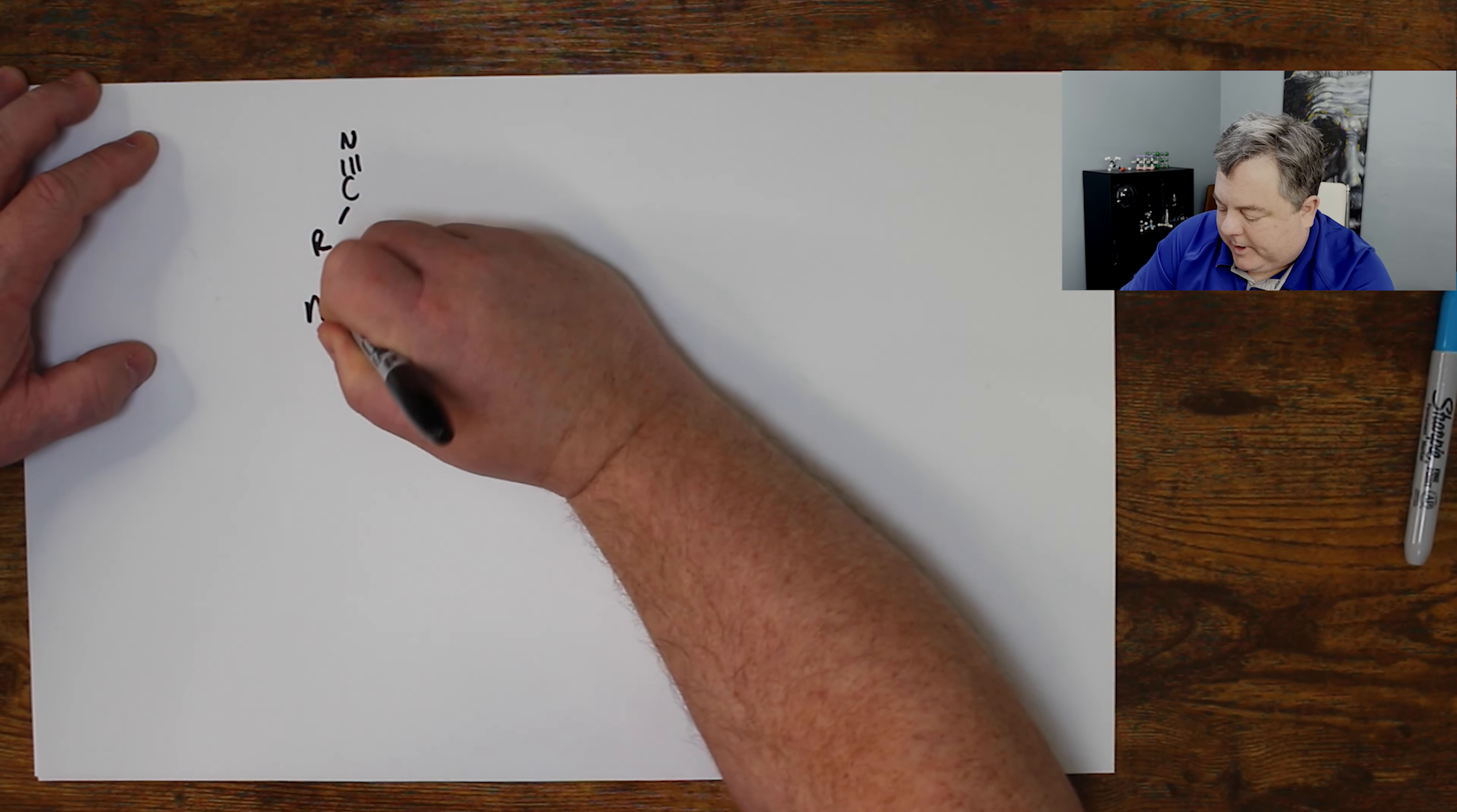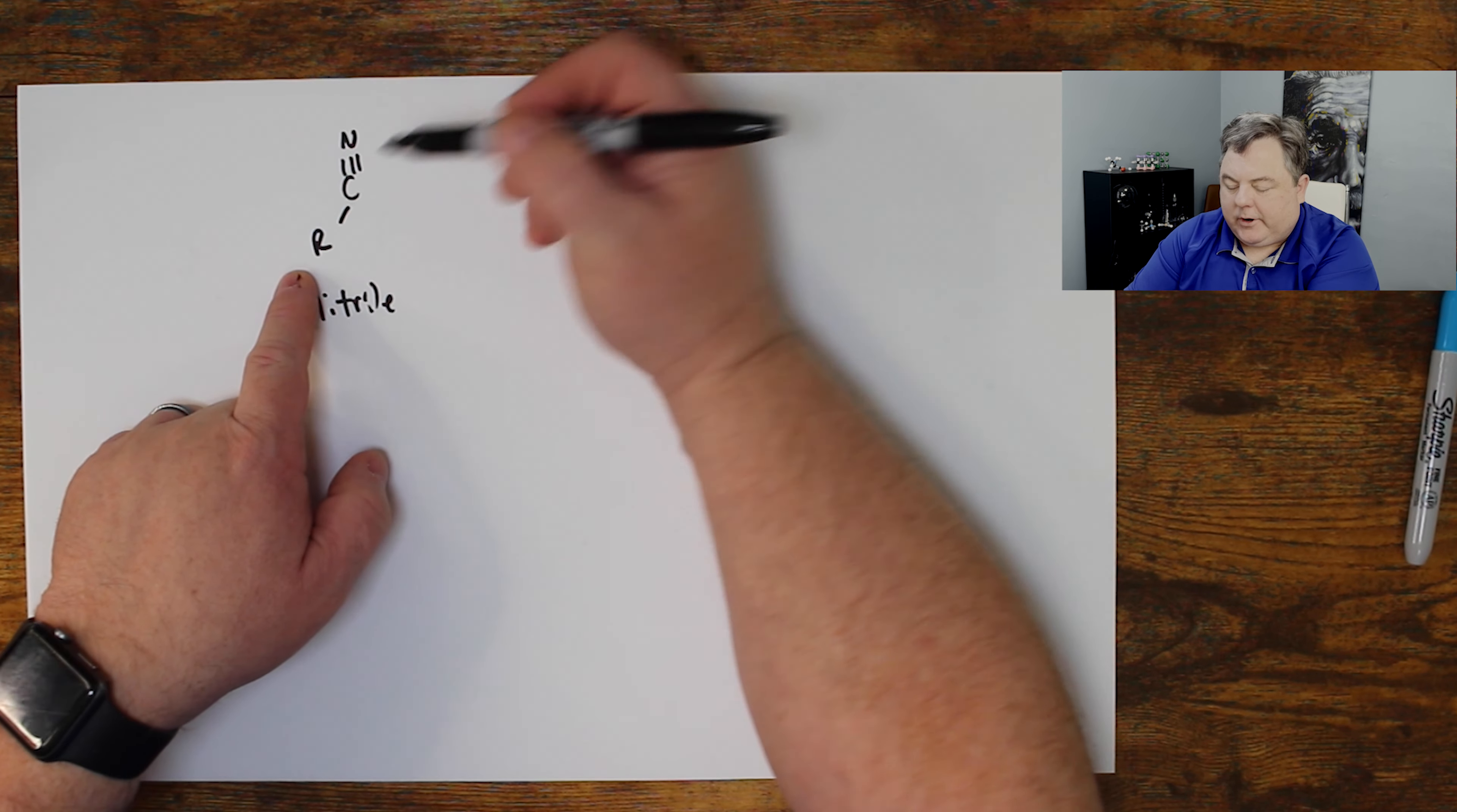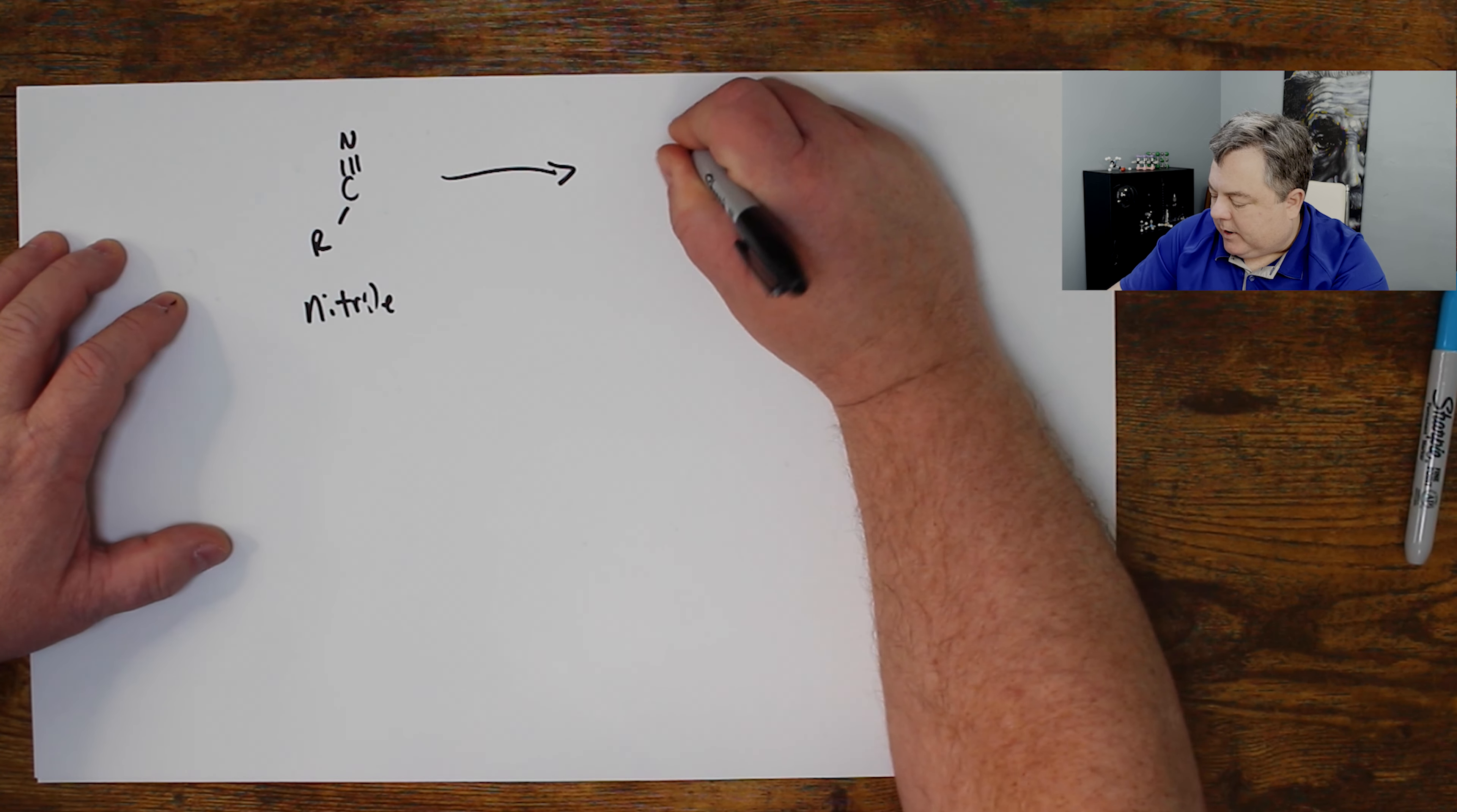I'm going to take a nitrile compound, and this would be linear. I'm just going to draw it to the side a little bit. And I'm going to turn that into this ketone compound.